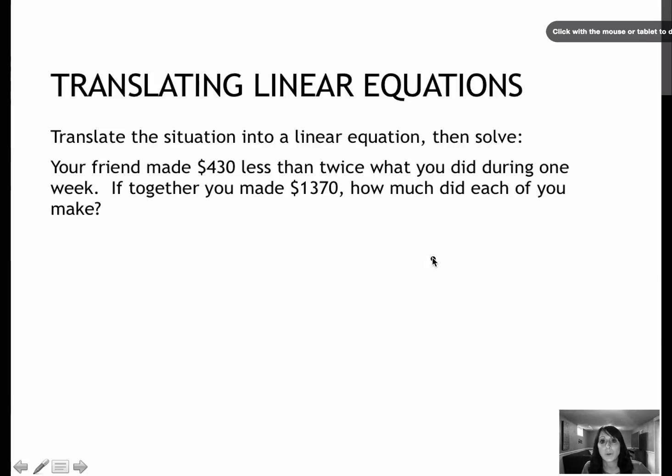This one is a story problem, so it's a little bit more difficult. So I'm going to read the question. Your friend made $430 less than twice what you did during one week. If together you made $1,370, how much did each of you make? So that's the full question. I need to assign a variable, and I'm going to write my variable as what I made during one week. So I'm going to say x is what money I made.